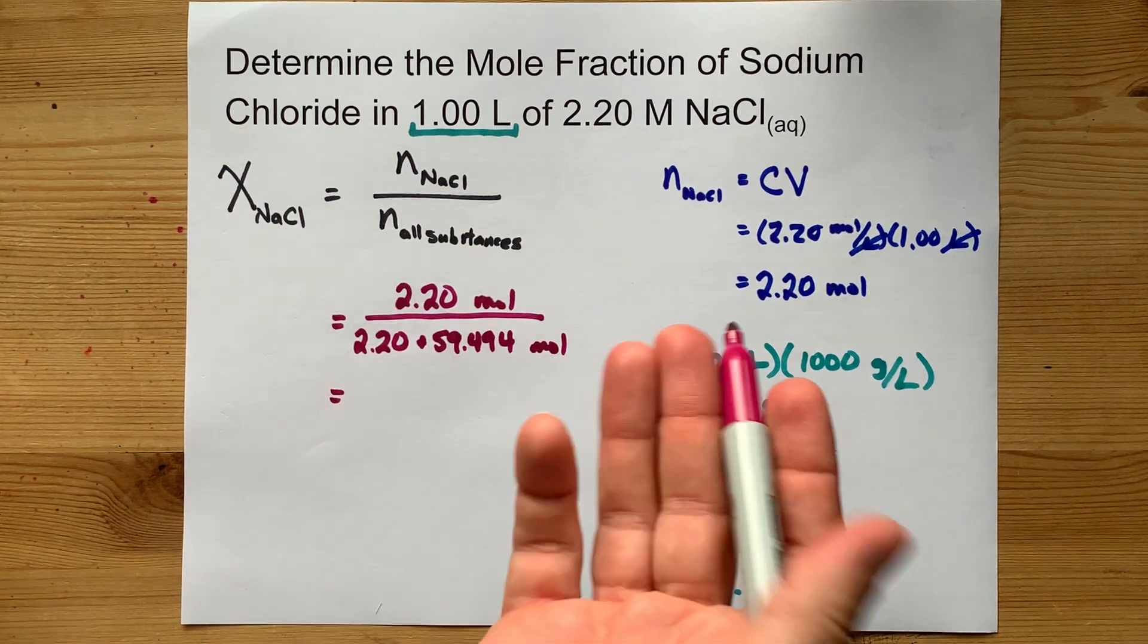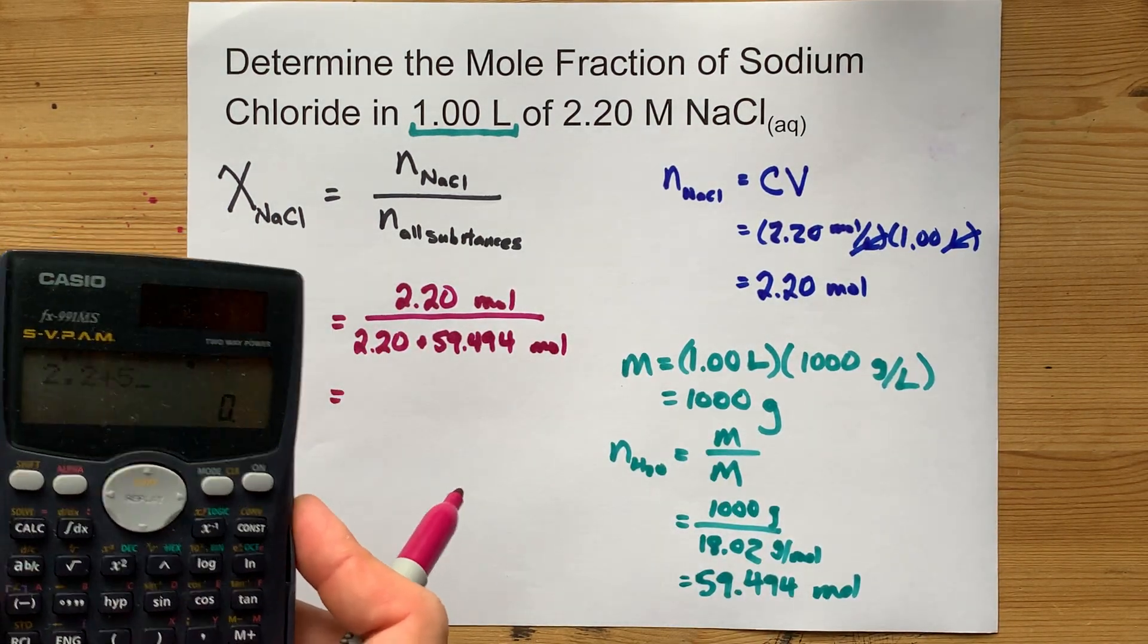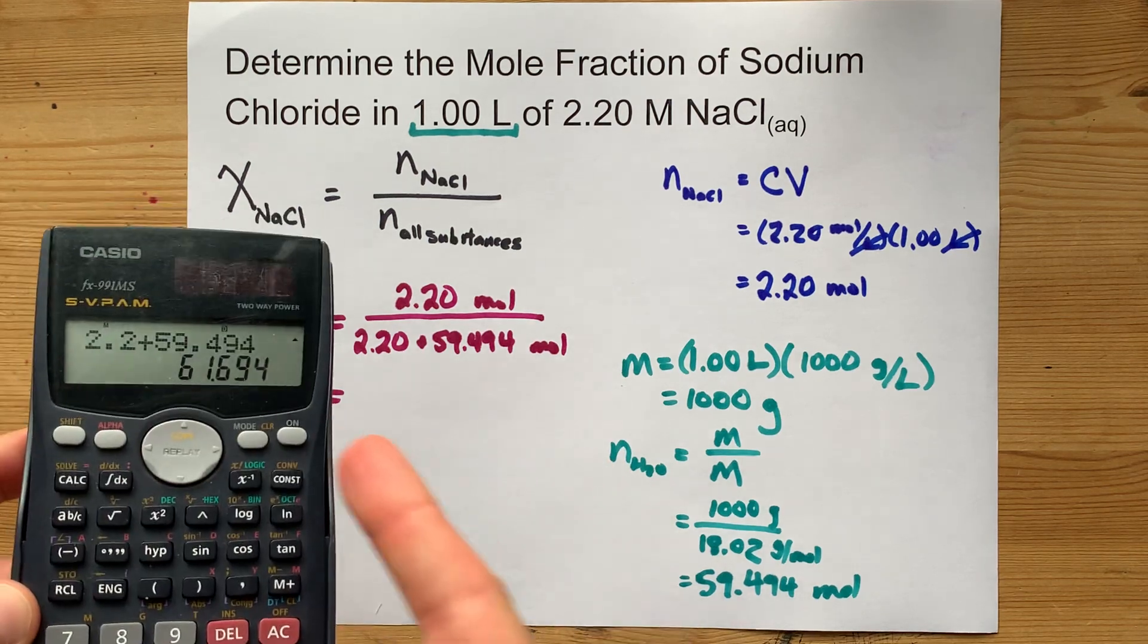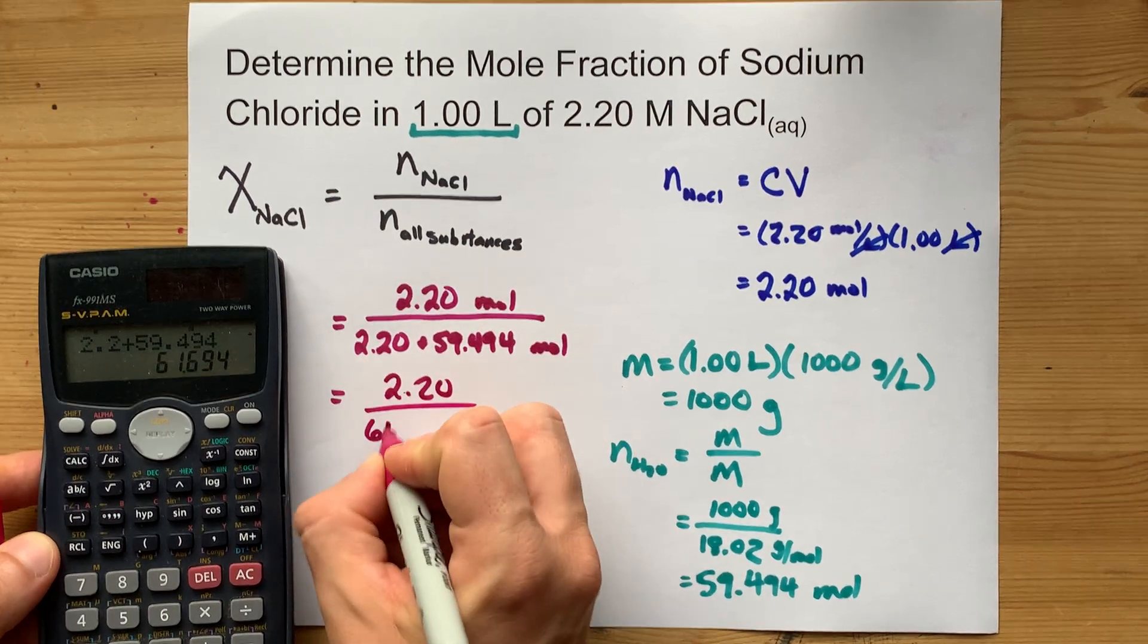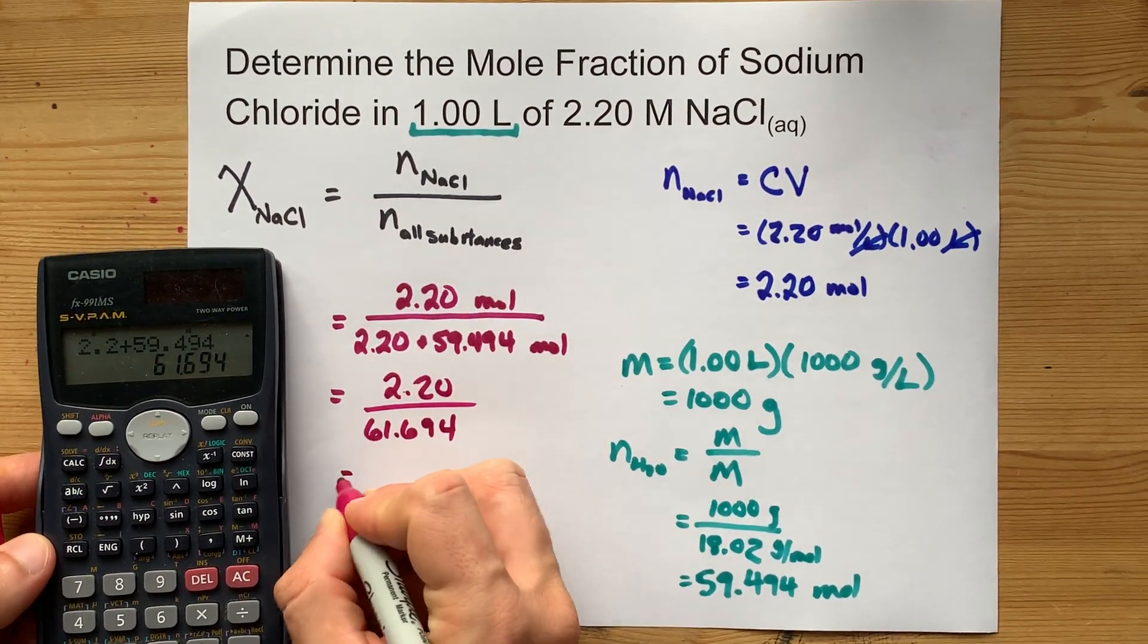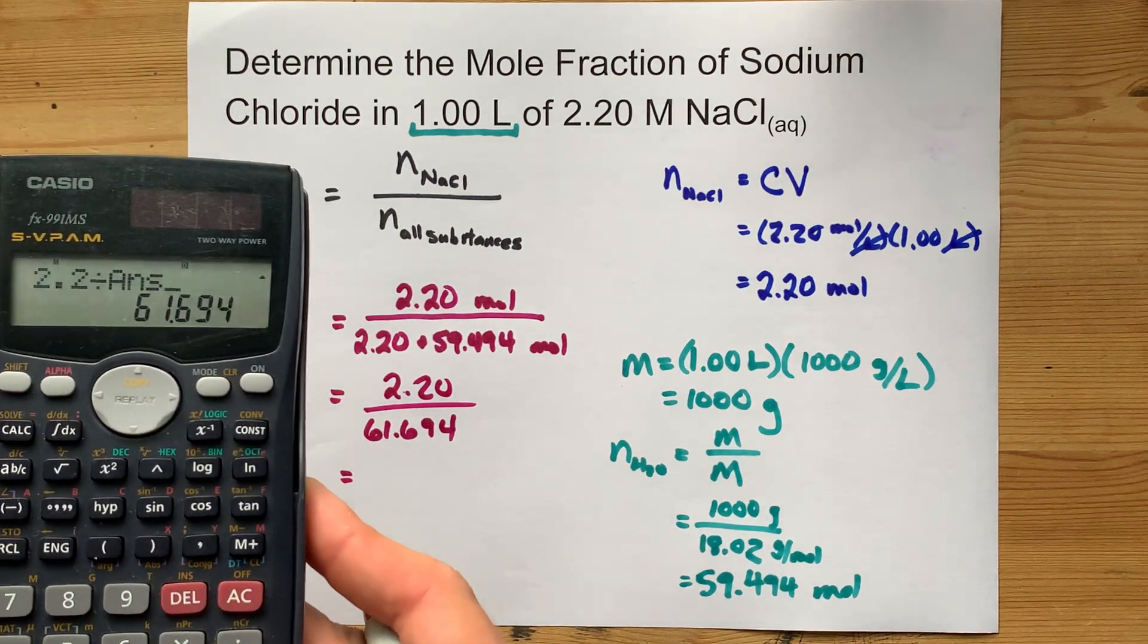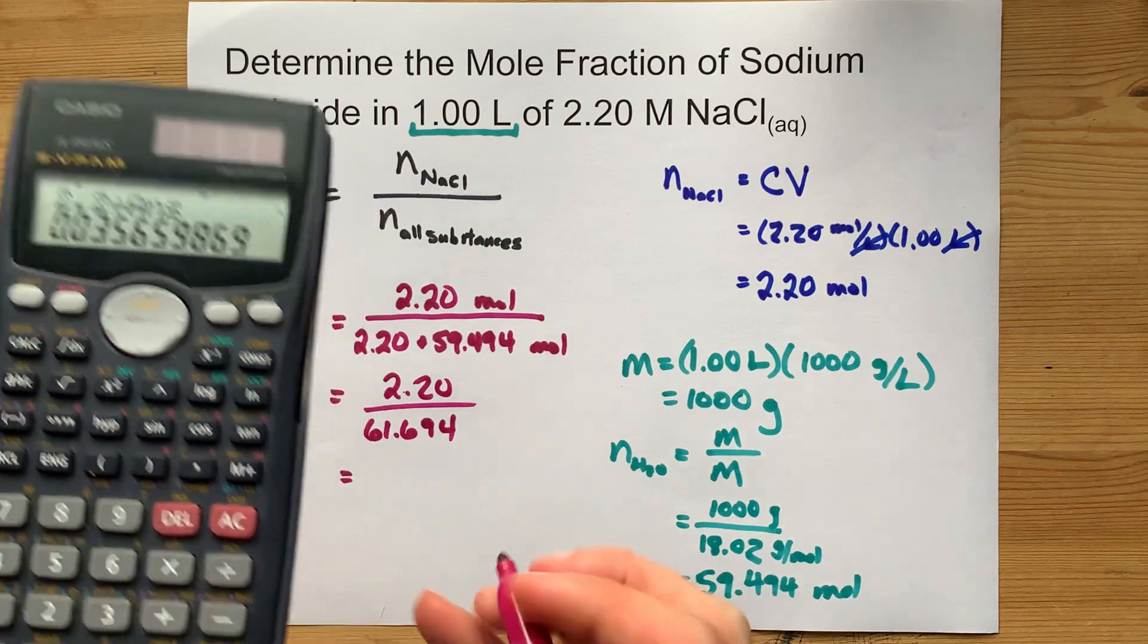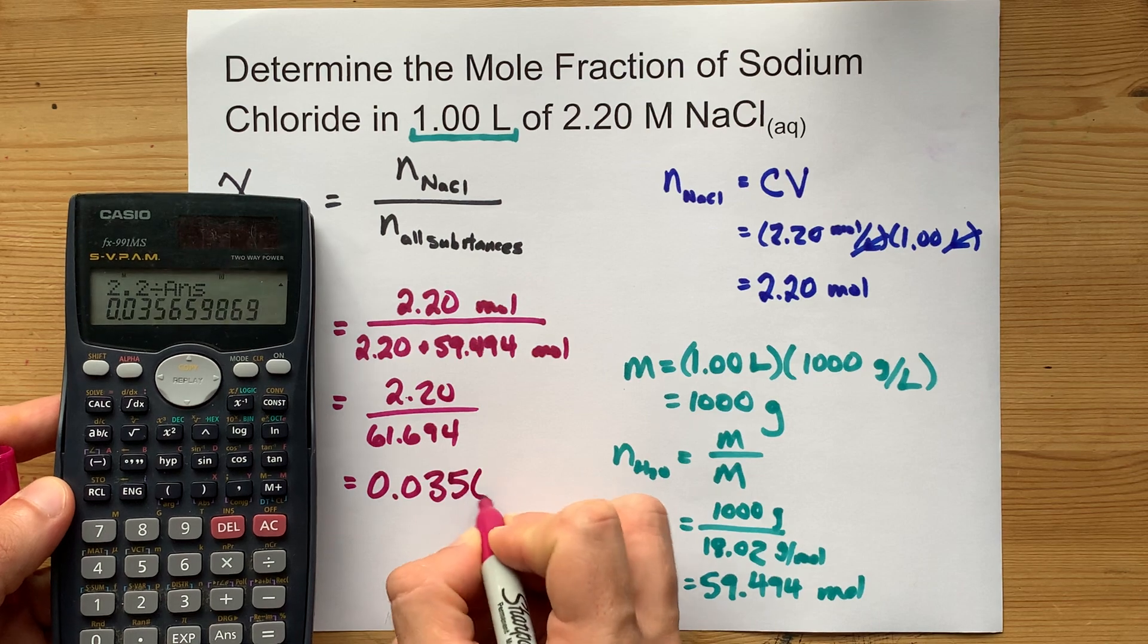2.2 out of the total is NaCl. 2.2 plus 59.494 gives me 61.694 the way I thought it did. 61.694 and 2.2 of that 61.694 was actually NaCl. That gives me 0.0356.